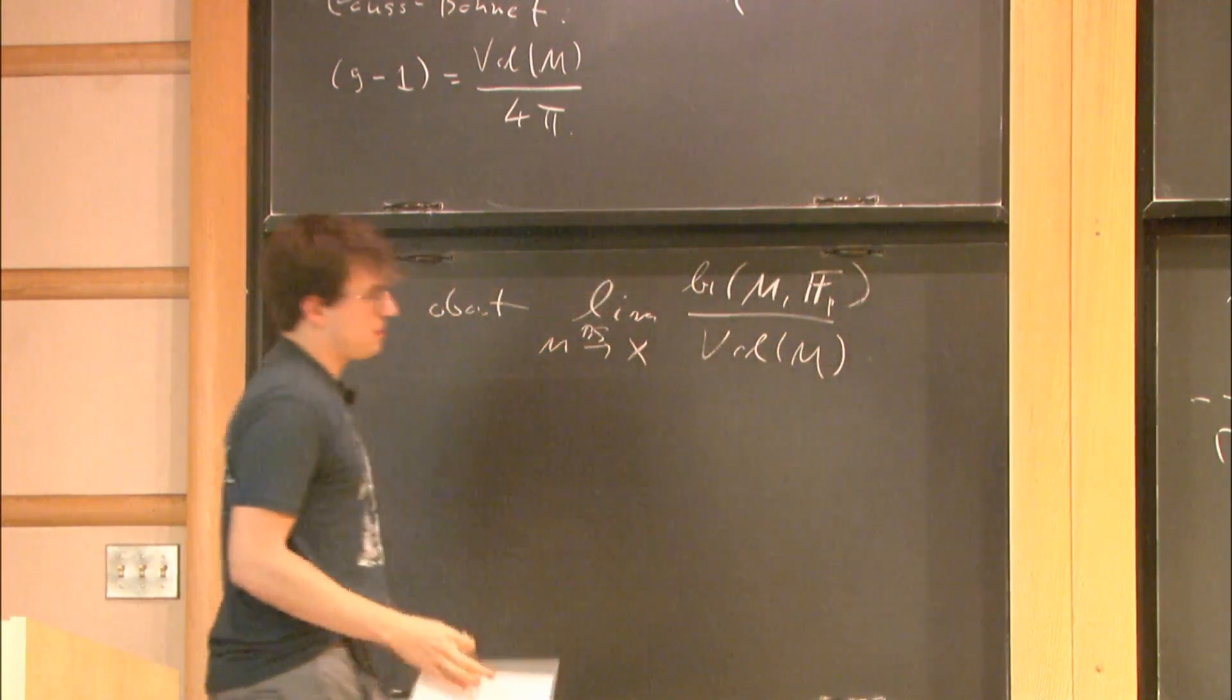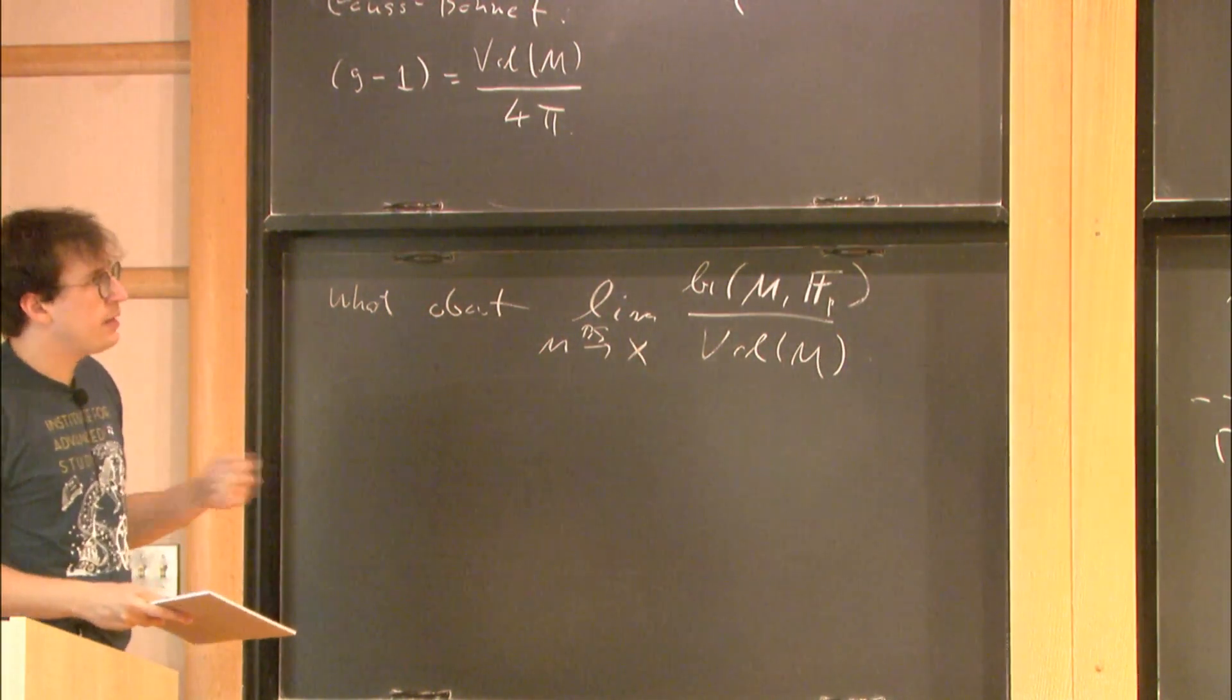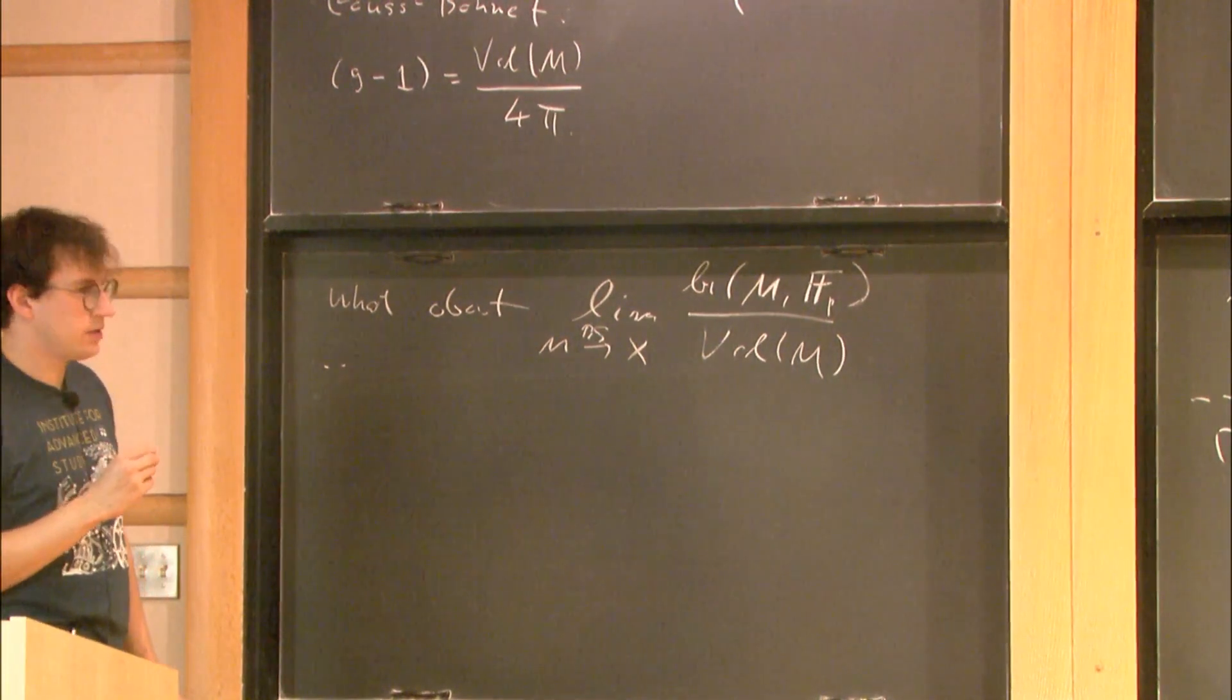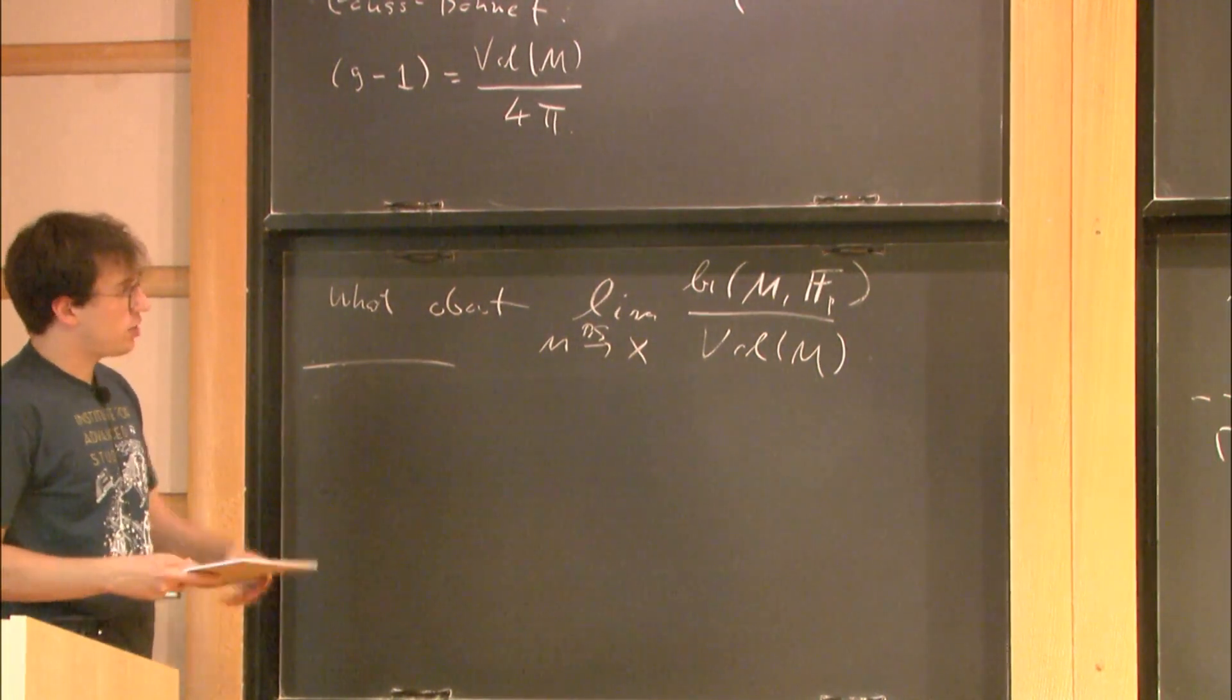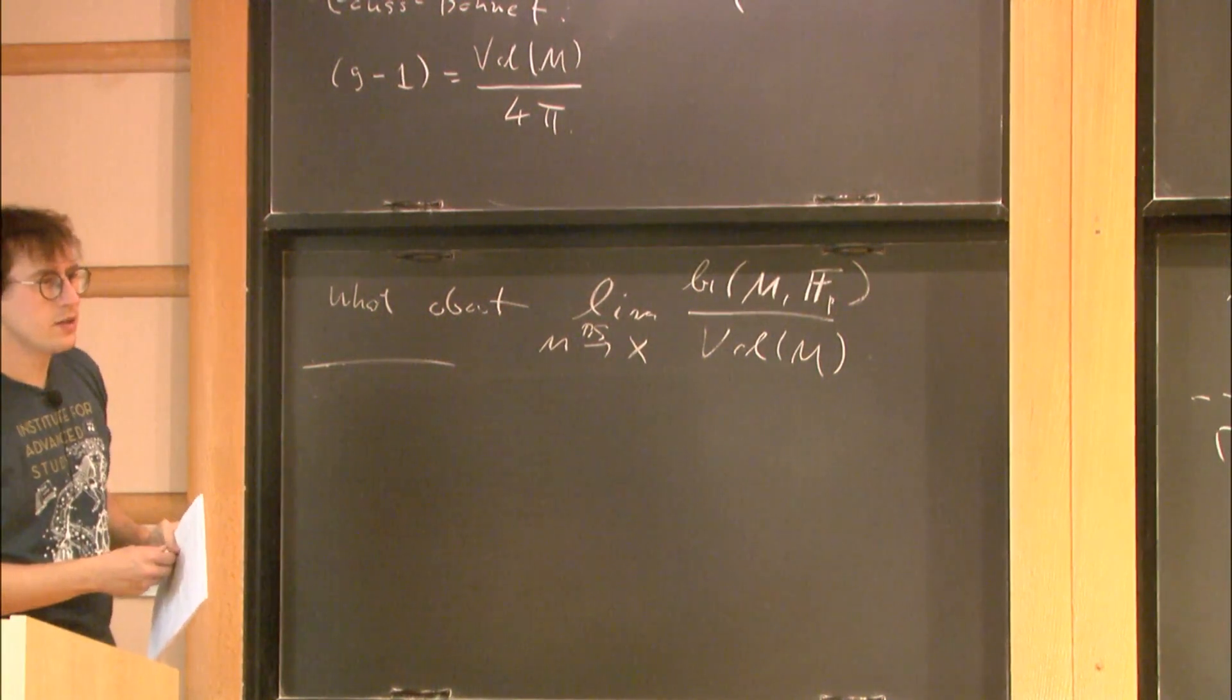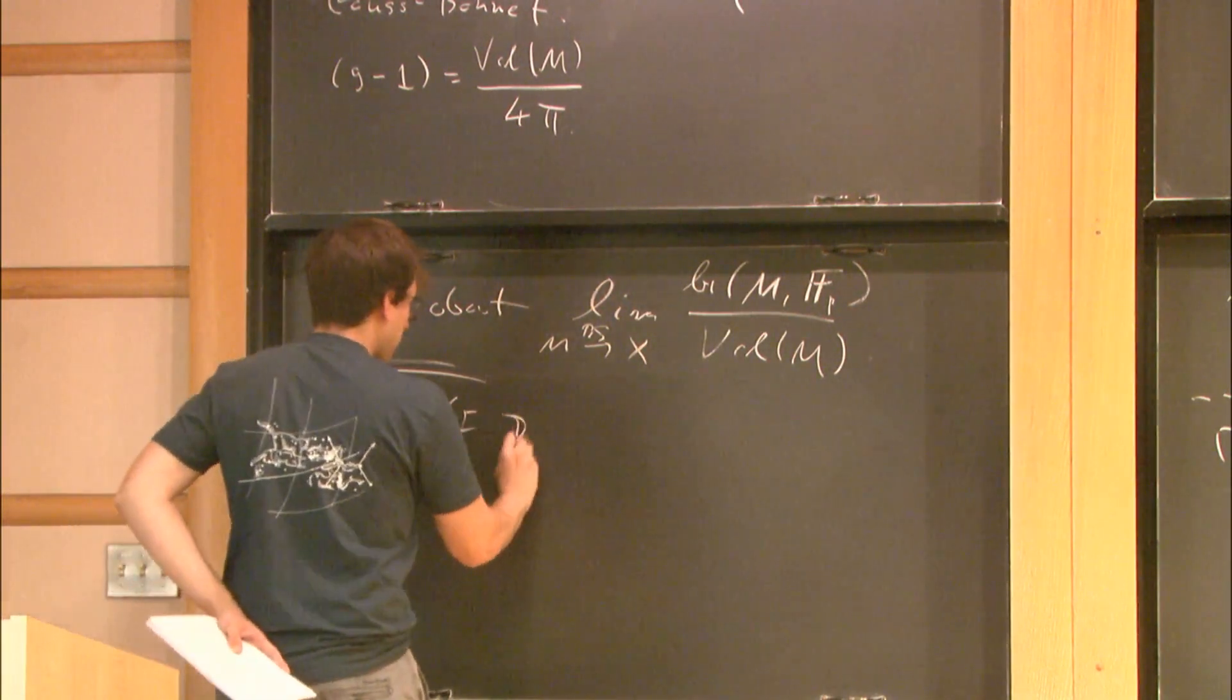We expect that there should be some invariant of X that captures those limits. But nothing like this has been done. In the last few minutes, I would like to tell you a new method to show that this is zero. This is done through studying the geometry of minimal representatives of homology classes in those manifolds. Actually, how much time do I have? Three minutes. Excellent.